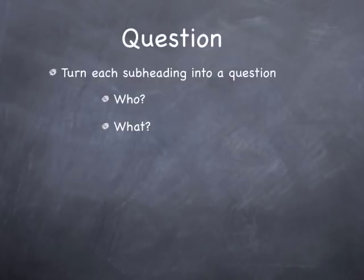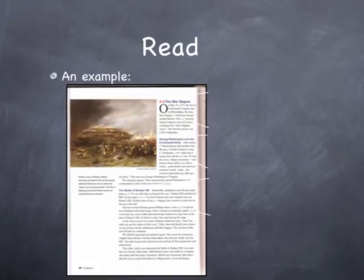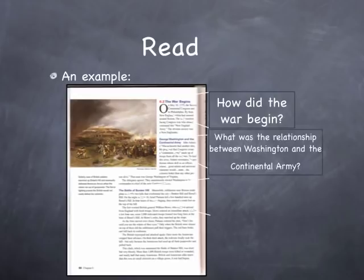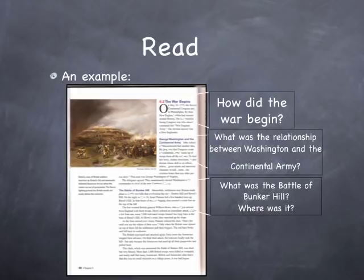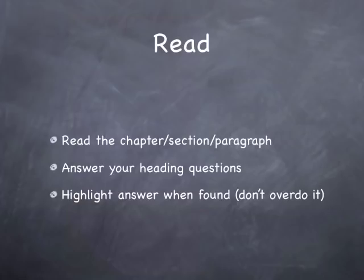Question words are: who, what, when, where, how, and why. Try to use logical questions. For example, the heading 'The War Begins' can be turned into 'How did the war begin?' 'Washington and the Continental Army' can be turned into 'What was the relationship between Washington and the Continental Army?' Or 'The Battle of Bunker Hill' can be questioned as 'What was the Battle of Bunker Hill?' or 'Where was it?' You should write these questions on a separate sheet of paper for later review.